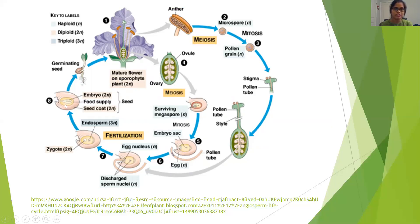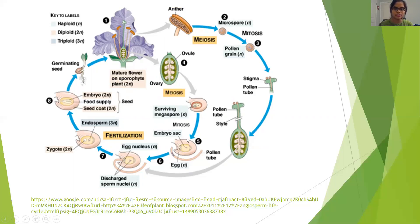The zygote grows into a seed, which continues to germinate and turns into a plant. Then the flowers produce and the cycle goes on. This is the life cycle of Mentha piperita. Thank you.